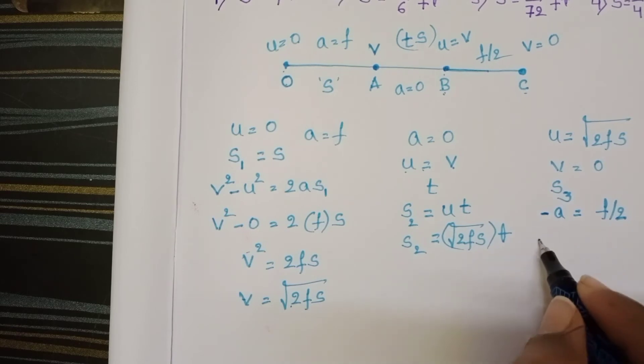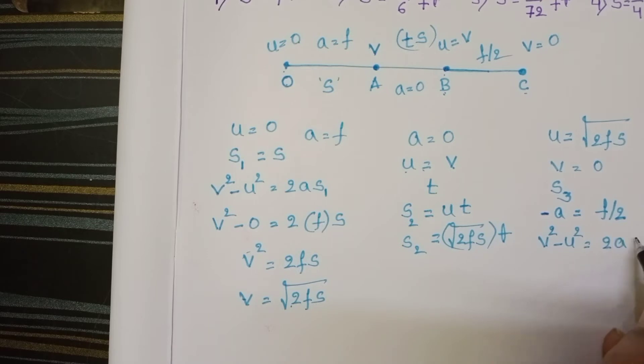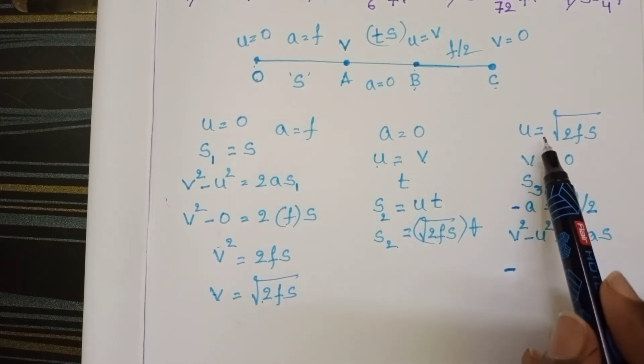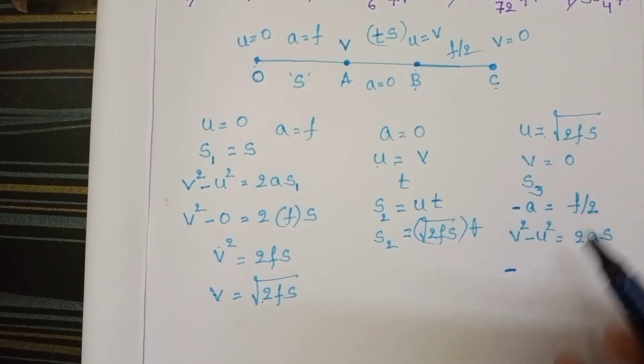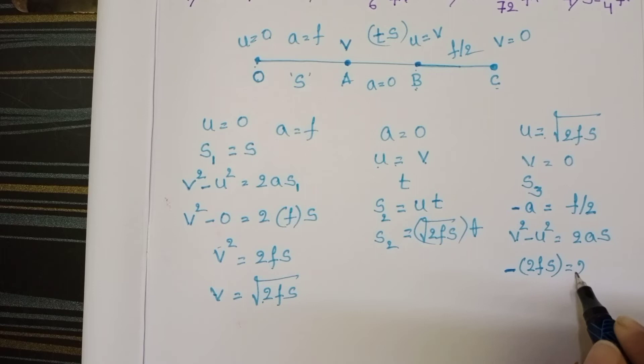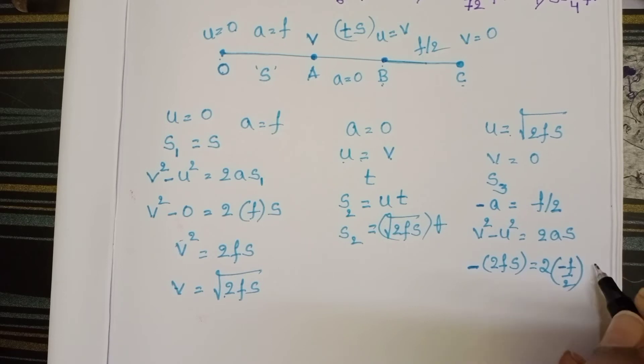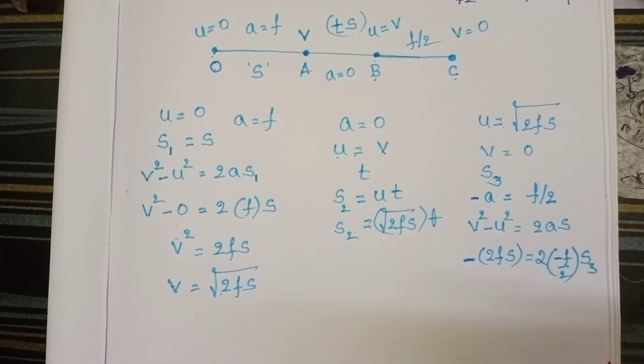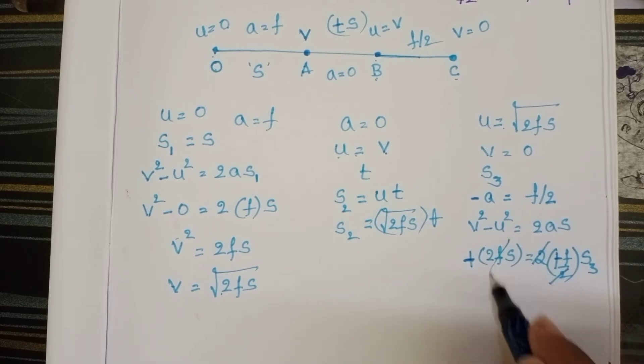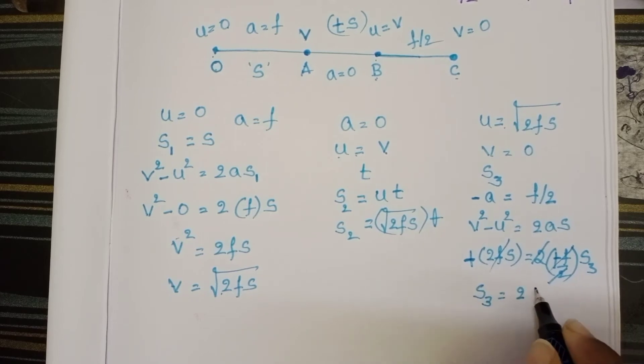So from equations of motion, v² - u² = 2as. So final speed is 0 - initial speed (√(2fs))² = 2fs = 2 × (-f/2) × s3. 2 gets cancelled, minus cancelled with each other and f also cancelled. Then s3 = 2s.